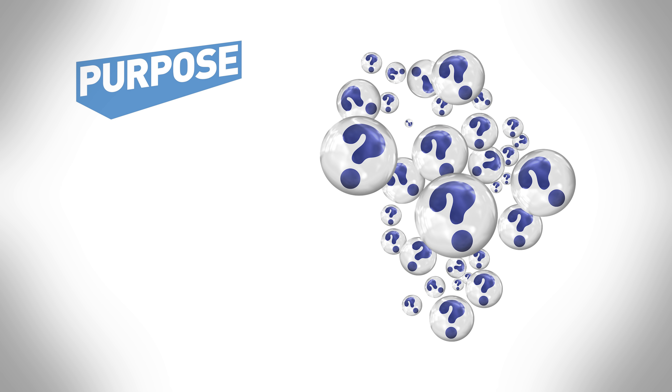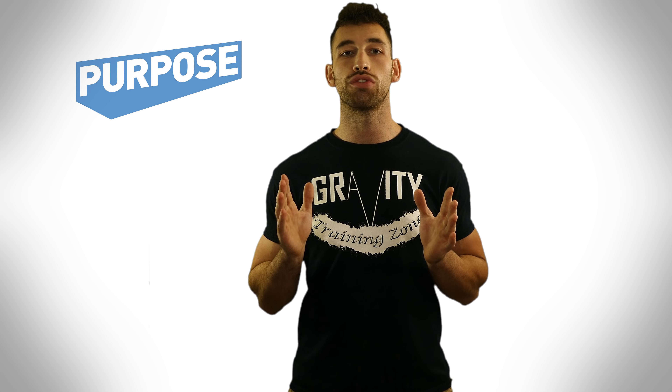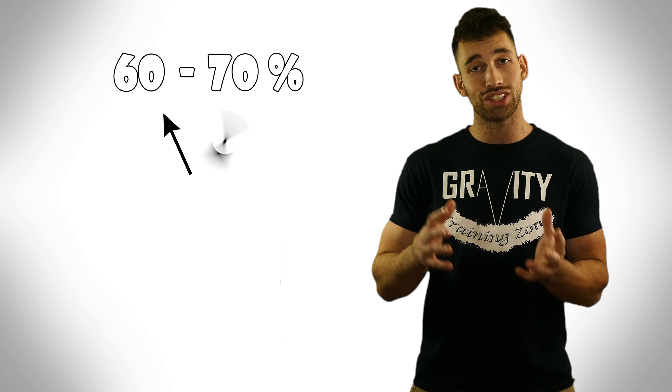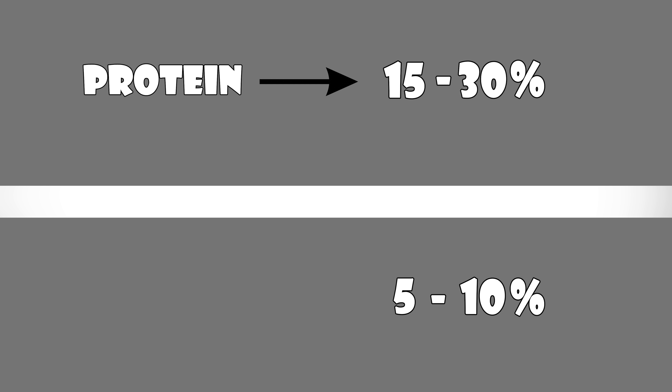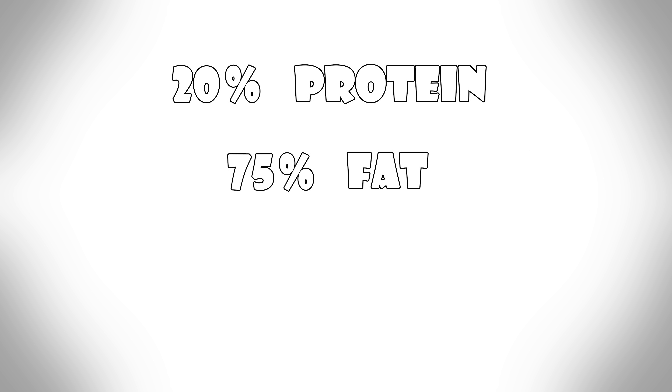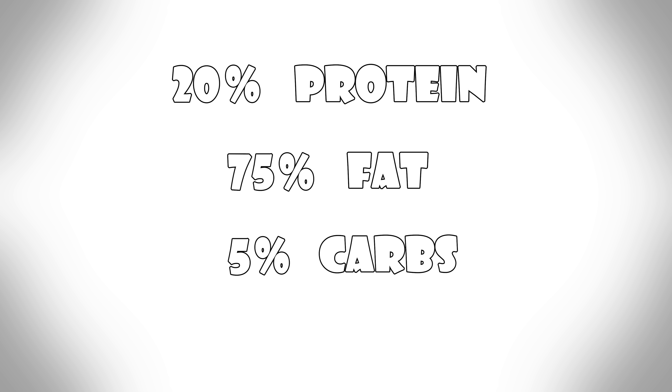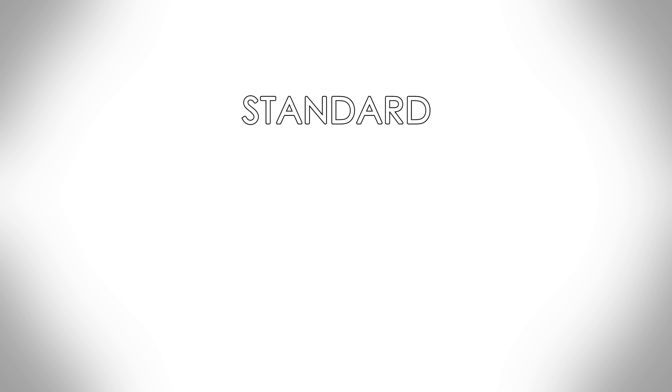Let's first start with the purpose. What's the purpose of the ketogenic diet? The goal is to force the body into a process known as ketosis, where fats are predominantly burned and used for energy rather than carbohydrates. Macros for the keto diet can vary from plan to plan, but you can expect anywhere from 60% to 75% of calories from fat, then 15% to 30% from protein, and 5% to 10% from carbs. The most common recommended split is 20% protein, 75% fat, and only 5% carbohydrates — this is referred to as the standard ketogenic diet.